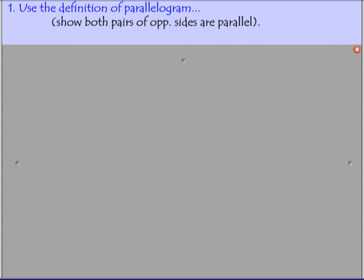So let's look at some choices we have. One is the obvious, which is using the definition of a parallelogram. If you can show that both pairs of opposite sides are parallel, then you've got a parallelogram. That's pretty straightforward.